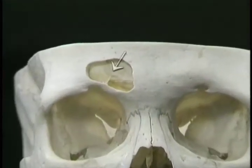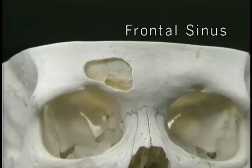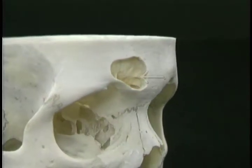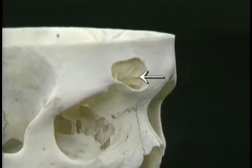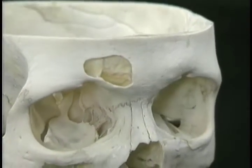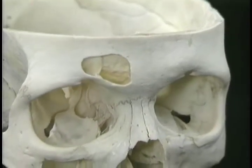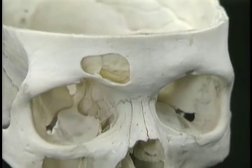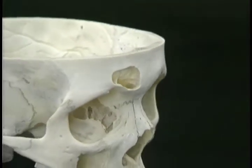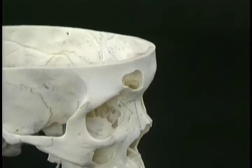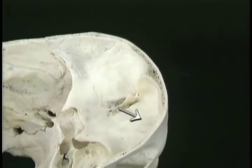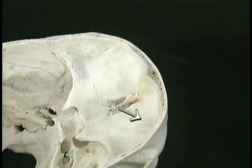To see the sinus cavities, we'll look at a skull in which part of the bone overlying each sinus has been removed. Here's the cavity for the right frontal sinus, with a left one on the other side of the partition. The frontal sinus extends upward behind the lower part of the forehead and also, to a variable extent, backwards between the roof of the orbit and the floor of the anterior cranial fossa.